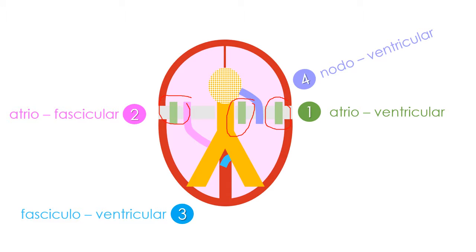Fourth, nodoventricular fibers connecting the AV node with the ventricular myocardium. And finally, the so-called atriohisian bypass tract connecting the atrial myocardium directly with the bundle of His.